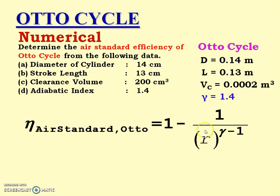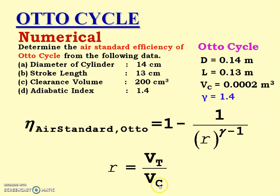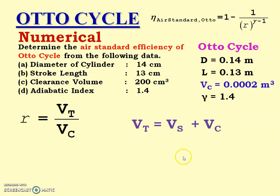To calculate R, we use the other given data. R is equal to Vt divided by Vc, where Vt is the total volume of the cylinder and Vc is the clearance volume. Vc is the clearance volume and its value is 200 cm³, which is given. Now we have to calculate Vt.